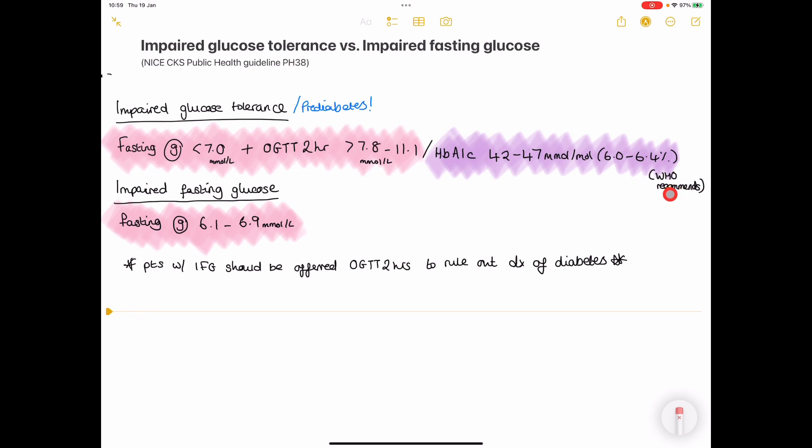World Health Organization recommend that instead of doing the serum glucose levels you do HbA1c. Anything between 42 to 47 or 6.0 to 6.4 percent is also a diagnosis of pre-diabetes or impaired glucose tolerance.